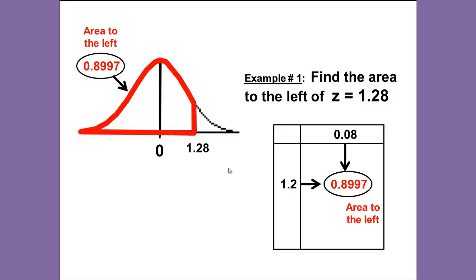We can either shade it, or as Ms. Borlaug has done, outline that area. Since the table gives us that area, that gives us 0.8997, and that is the area to the left.